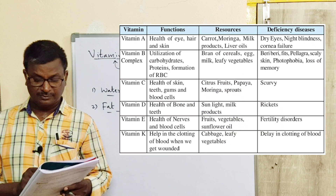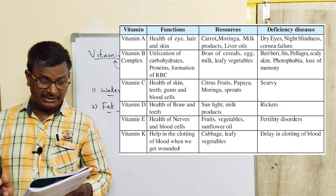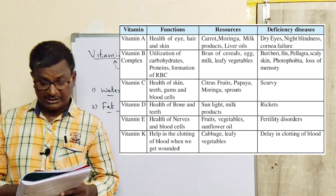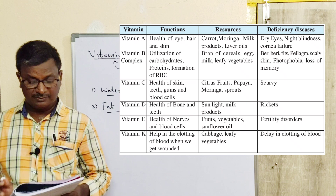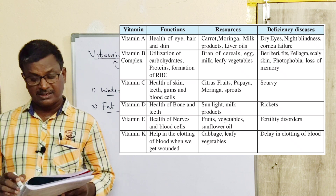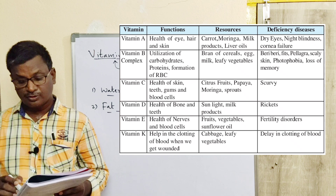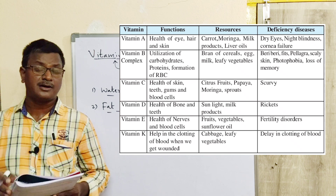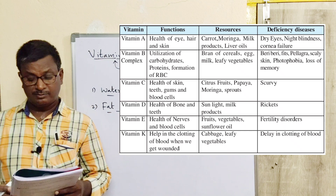Quick summary of deficiency diseases: vitamin E causes fertility disorders; vitamin D causes rickets; vitamin C causes scurvy; vitamin B complex causes beriberi, pellagra, scaly skin, photophobia, and loss of memory. All these are diseases caused by vitamin deficiencies.